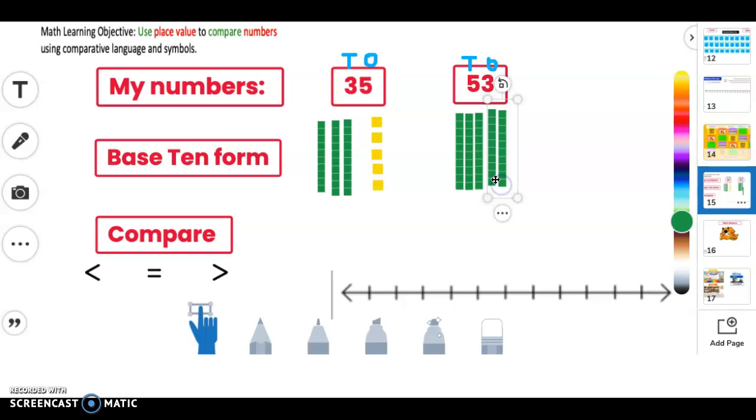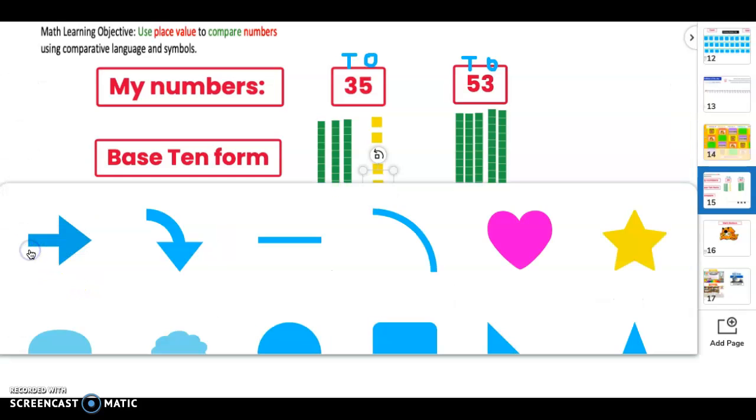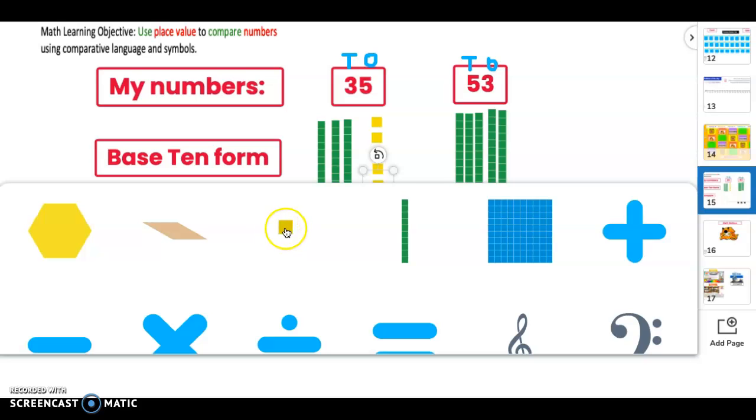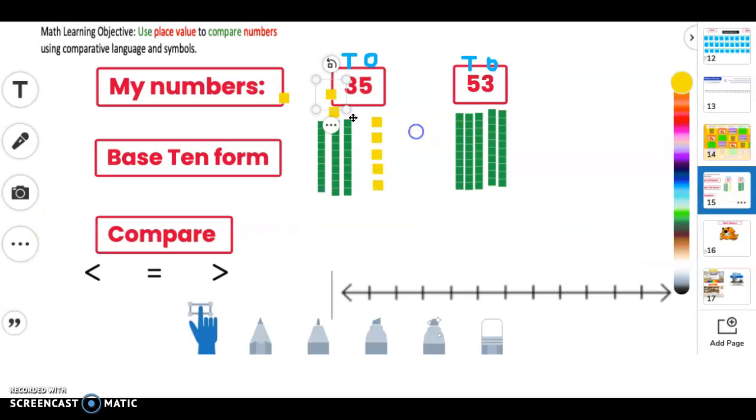So there are my five tens and let me go into my shapes and I need three ones. One, two, three. So it can make the number 53.